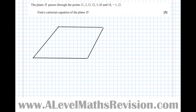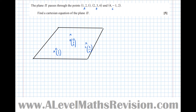Here's a worked example. Three points on a plane: A = (1, 2, 1), B = (2, 3, 6), and C = (4, −1, 2). From these, we can get two direction vectors that lie on the plane by subtracting points. Direction AB = B − A = (2−1, 3−2, 6−1) = (1, 1, 5).